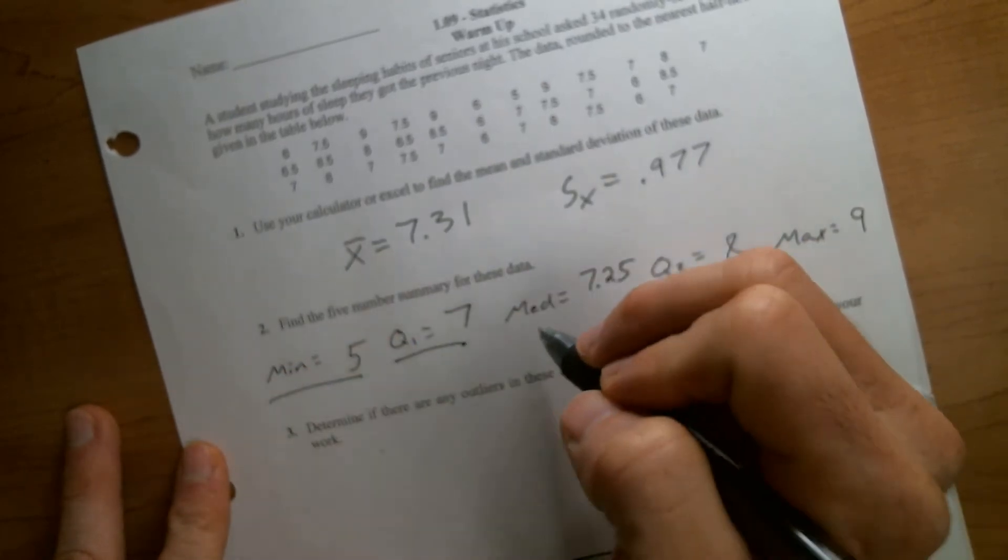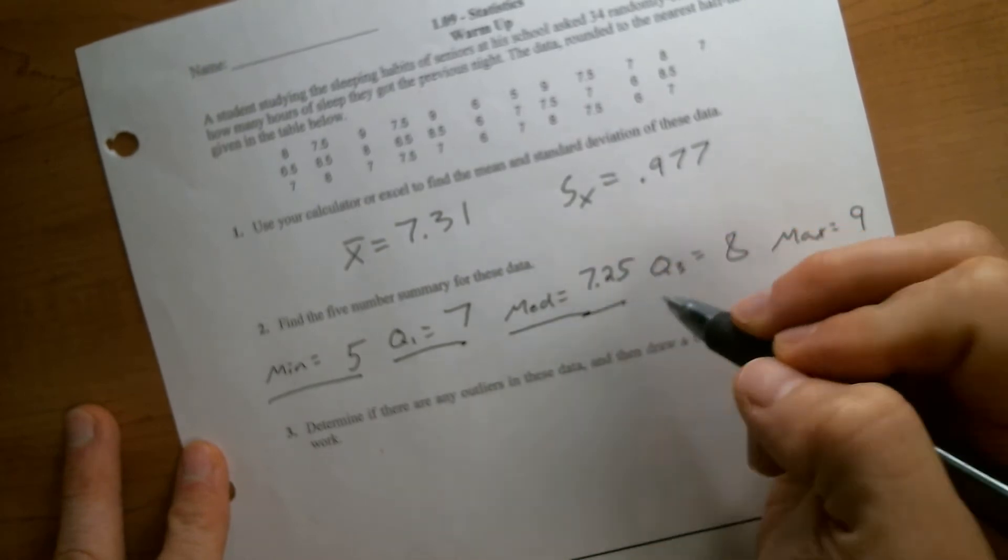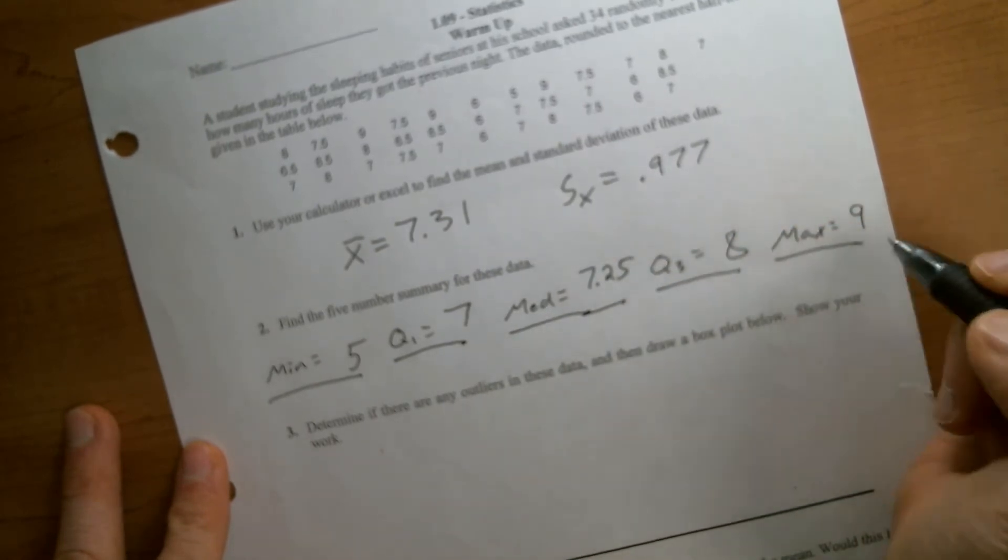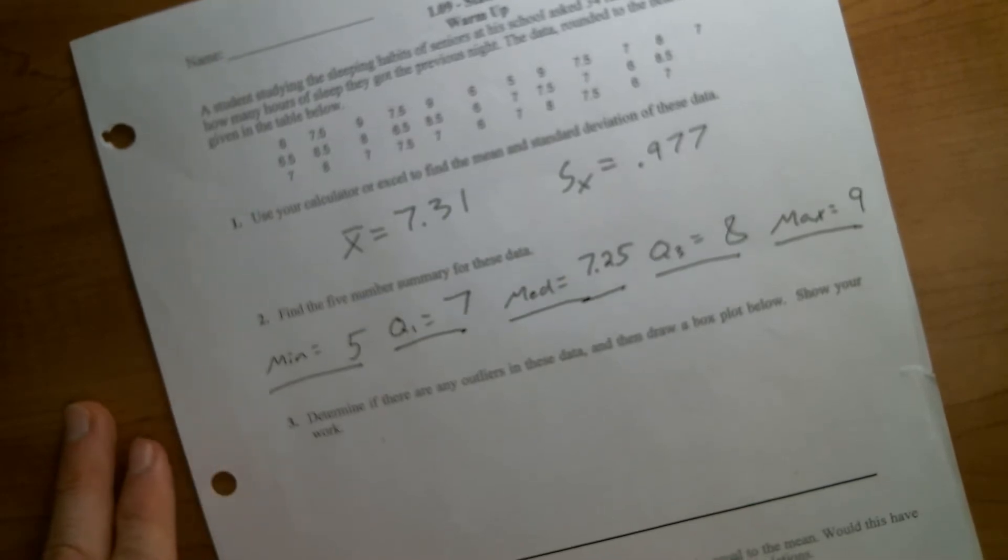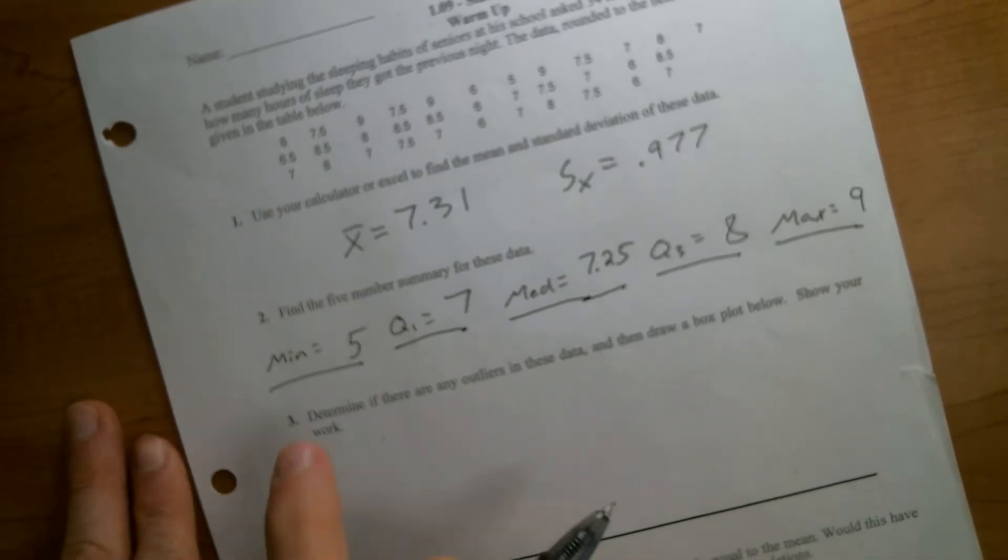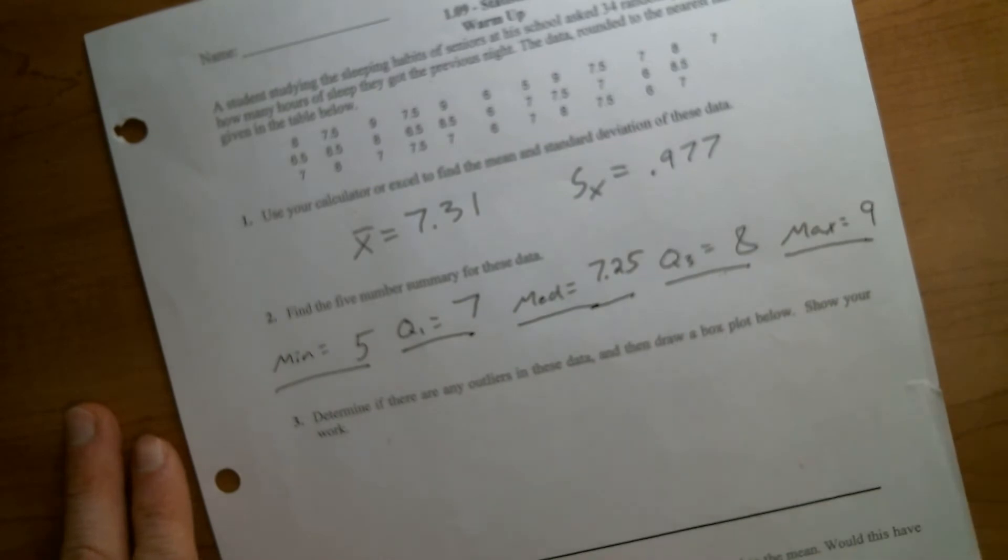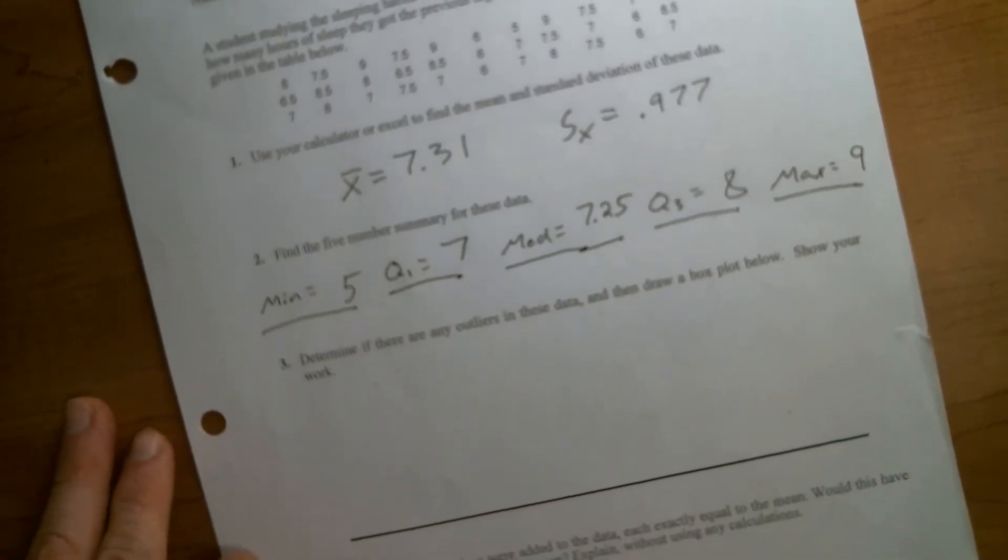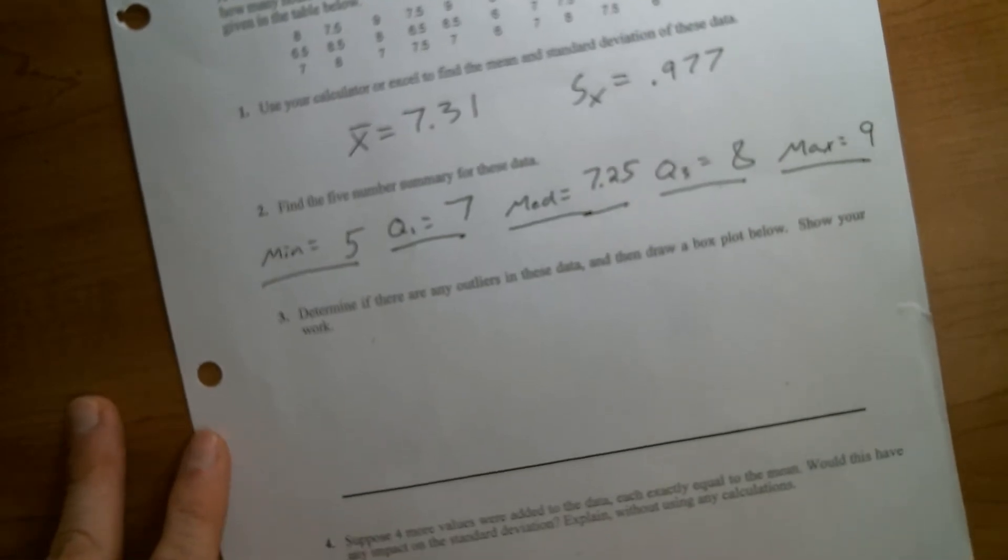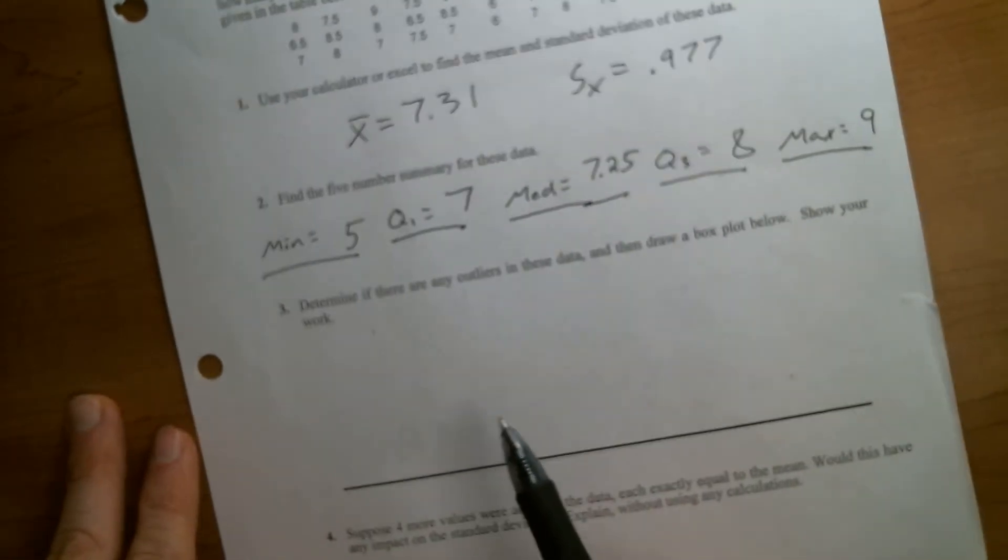These right here are the pieces that make up a five number summary. And just make sure that you remember what is included in the five number summary because a lot of times kids try to give me the mean or the standard deviation and then they lose points.